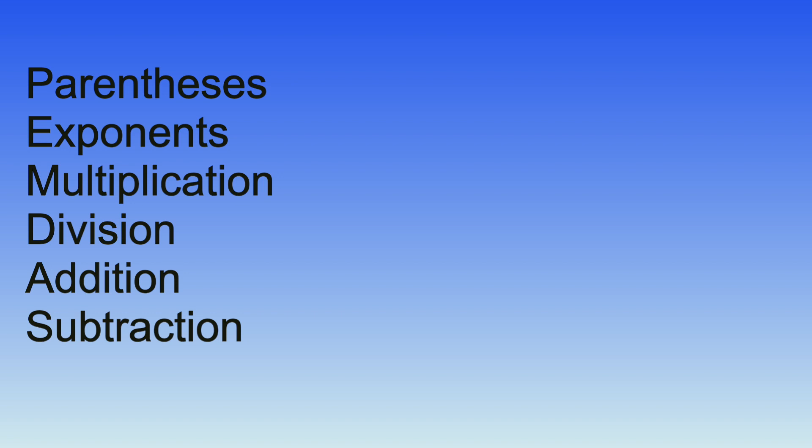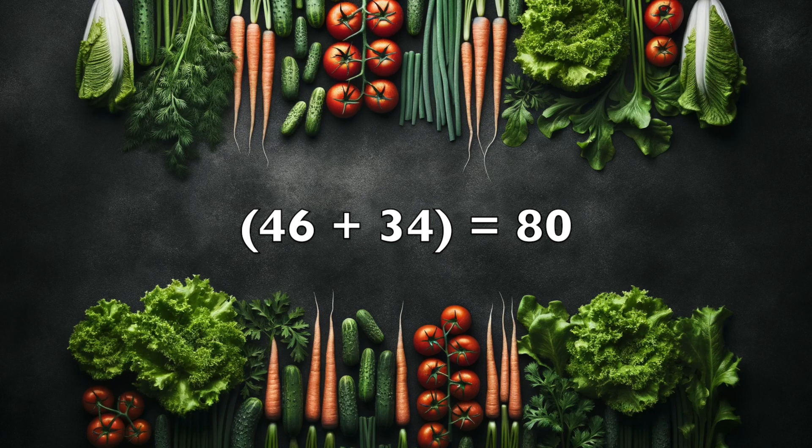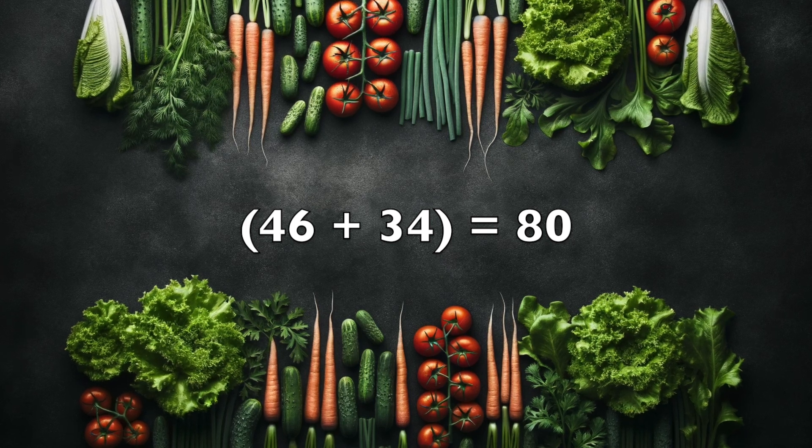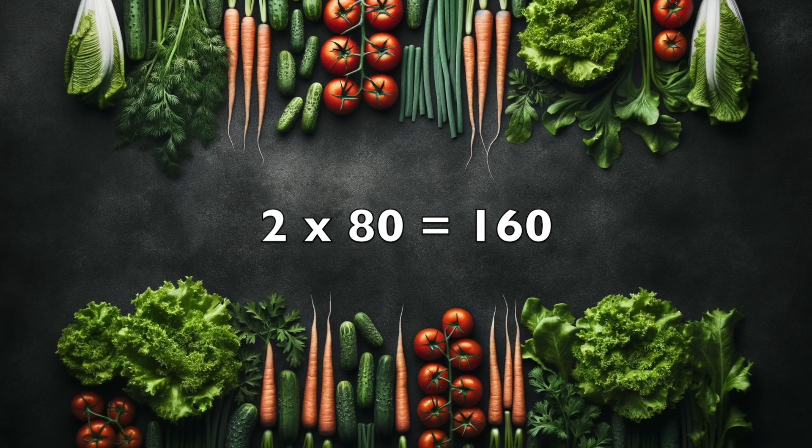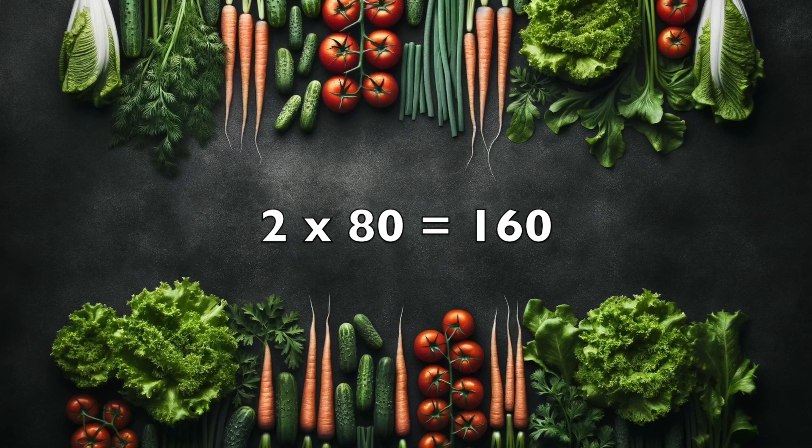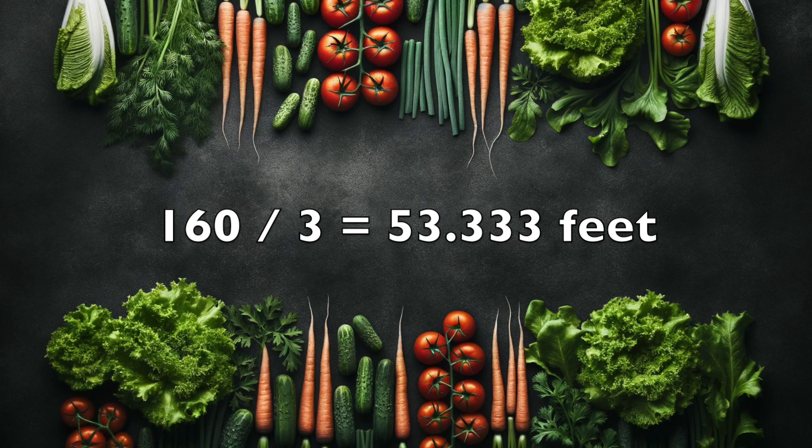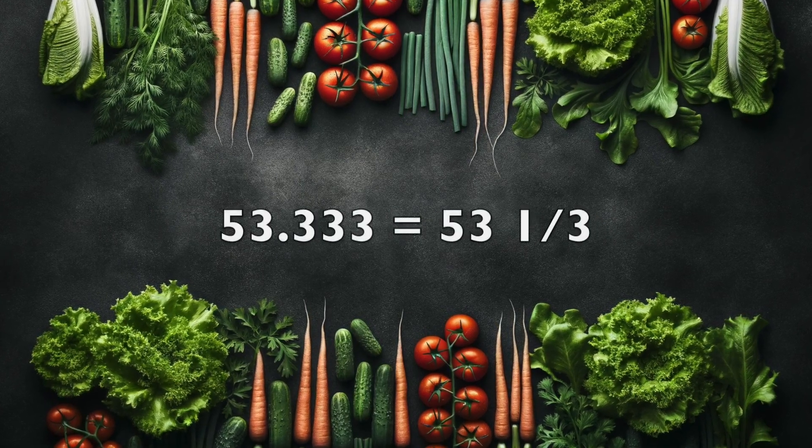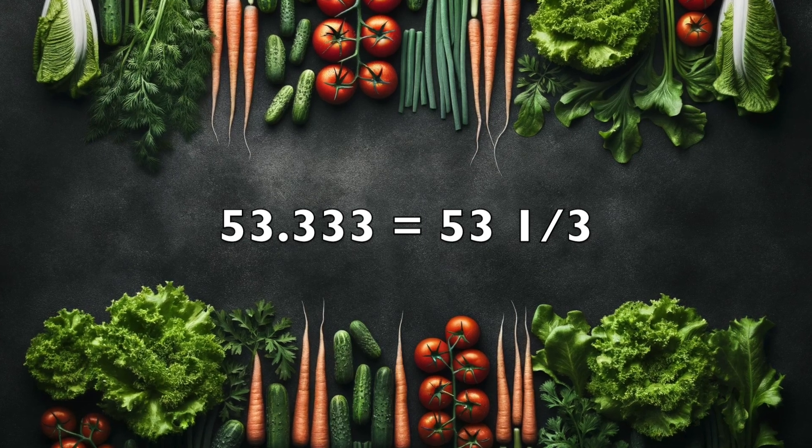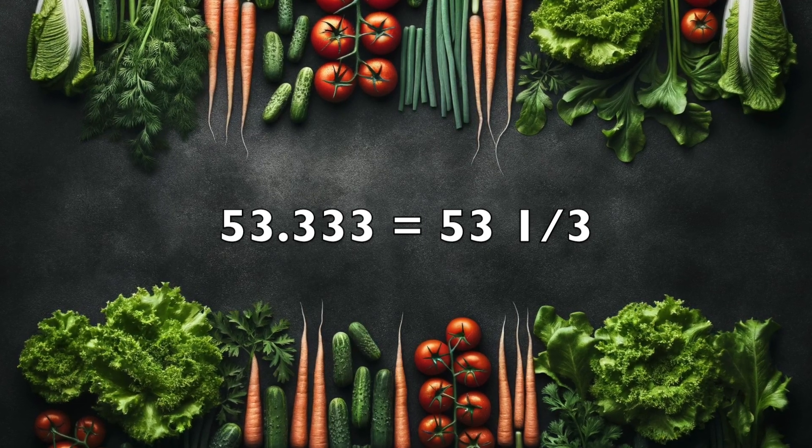Step 1, following PEMDAS, we'll handle the operations inside the parentheses first. Combine the length and width, 46 plus 34 equals 80. Step 2, multiply the sum by 2. 2 times 80 equals 160. Step 3, convert the total feet to yards, 160 divided by 3 equals 53.333. Step 4, express the decimal in fraction form, which gives us 53 and a third yards.